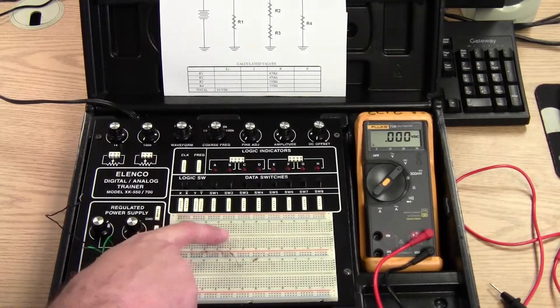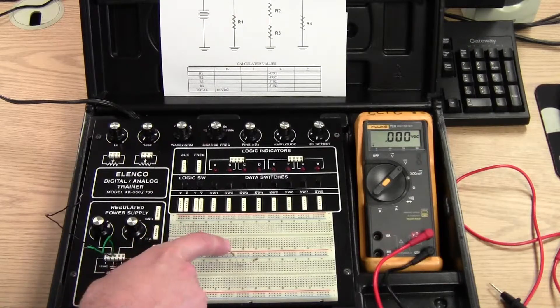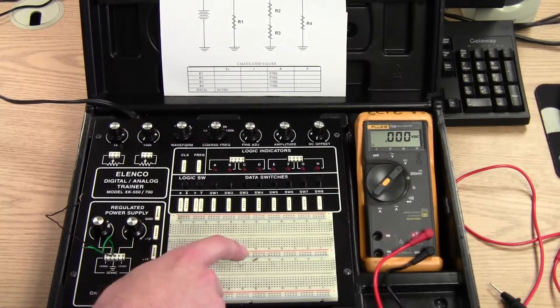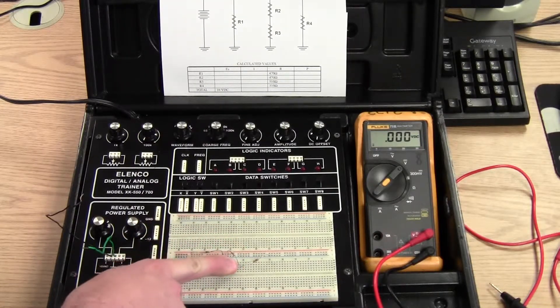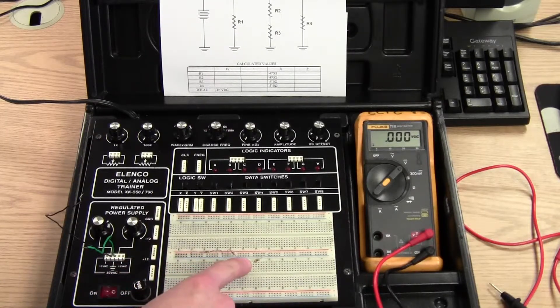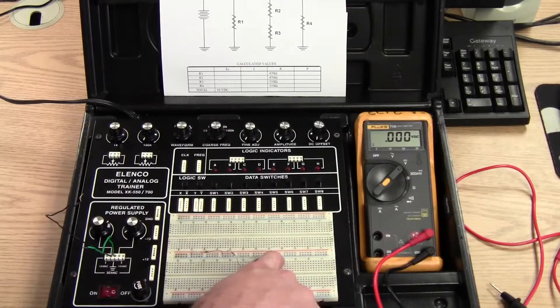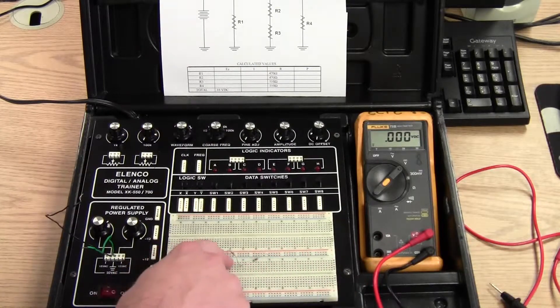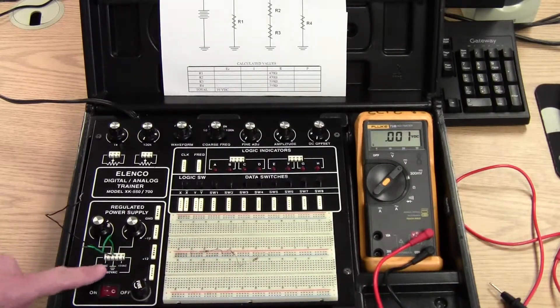So when the current comes in the positive strip it flows down to R2 which is the 470 through the 470 to row 14 and then from row 14 to the 510 on to the negative strip of the breadboard then back to our ground.